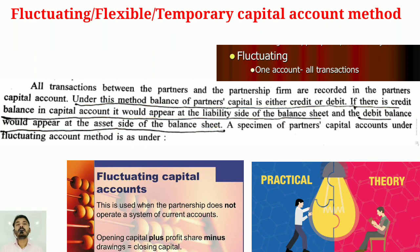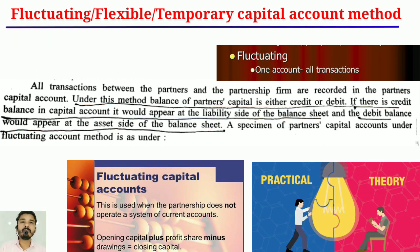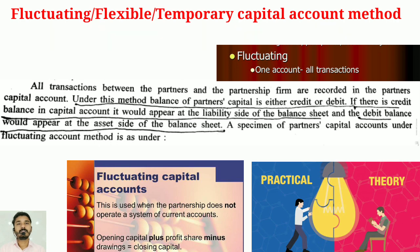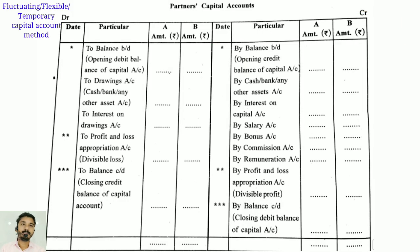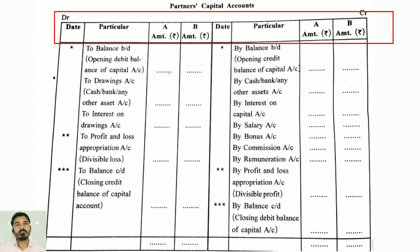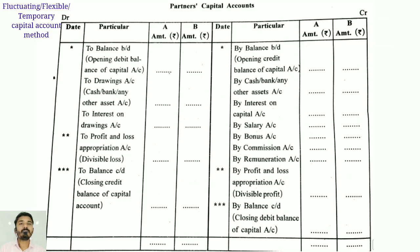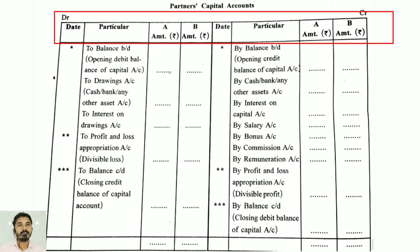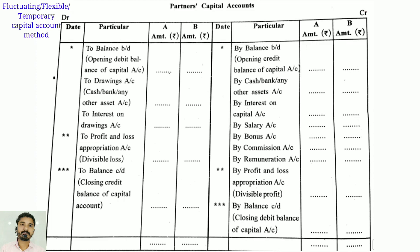A specimen of the partner's capital account under the fluctuating account method is as follows. Students, here you have a partner's capital account as the title. The left side is debit and the right side is credit. On the left side you have: date, particulars, and partners' names — here you have two partners, A and B. On the right side you also have: date, particulars, and two partners, A and B.